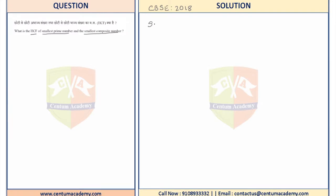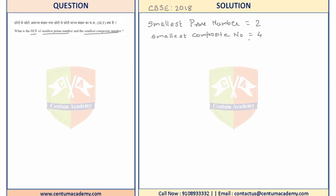The smallest prime number is 2. Now, 1, 2, and 3 are not composite numbers, so the smallest composite number is 4. A composite number is a number which has more than two factors.